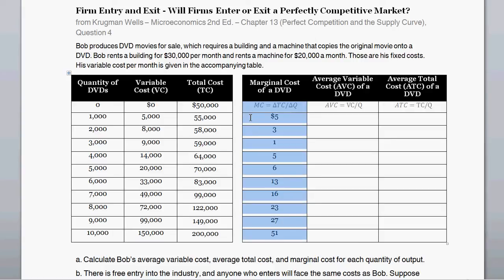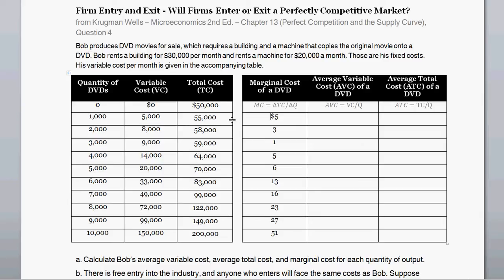One important thing to note: marginal cost fits in between two quantity levels. For organizational purposes I put the $5 marginal cost on the same row as 1,000 DVDs, but it represents the cost of going from zero to 1,000 DVDs produced. Similarly, the $51 marginal cost down at the bottom represents going from 9,000 to 10,000 DVDs produced.